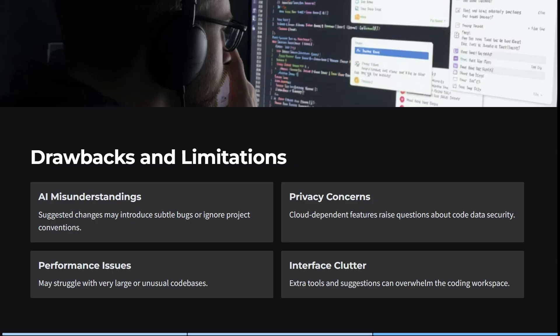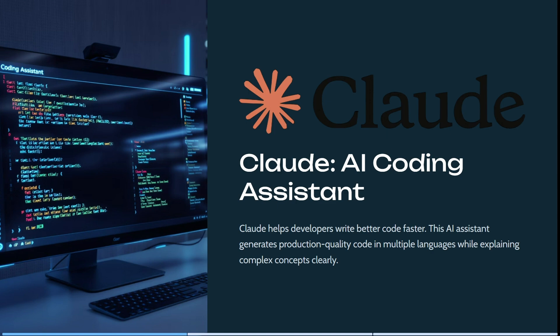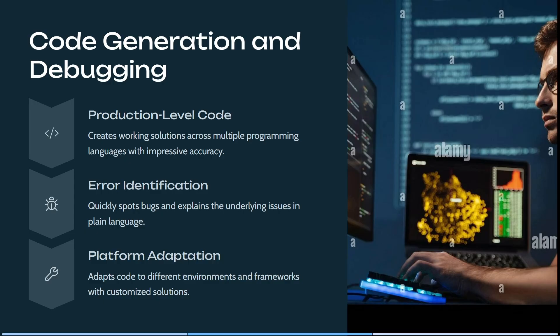Claude has actually been around for quite a while. Claude helps developers write better code faster — the AI assistant generates production-quality code in multiple languages while explaining complex concepts in a simpler, clearer format. It creates working solutions across multiple programming languages with impressive accuracy. It also has error identification that quickly spots bugs and explains the underlying issues in plain language, and it adapts code to different environments and frameworks with customized solutions.